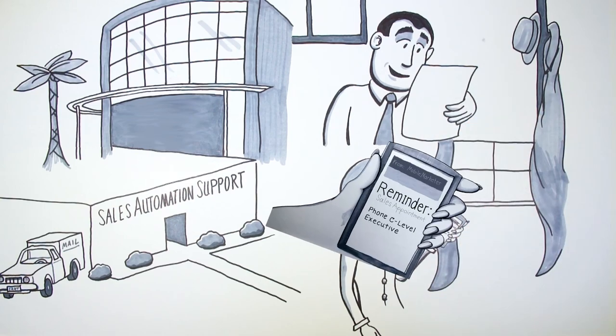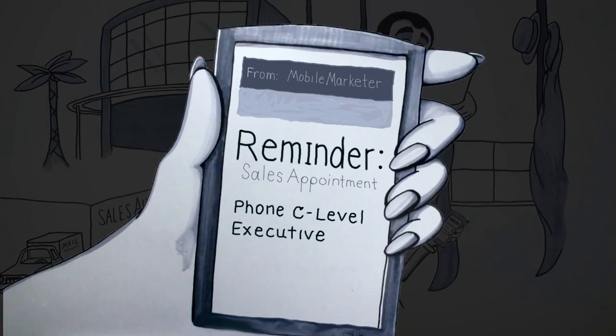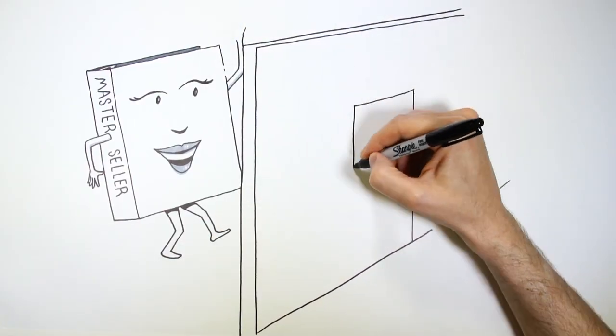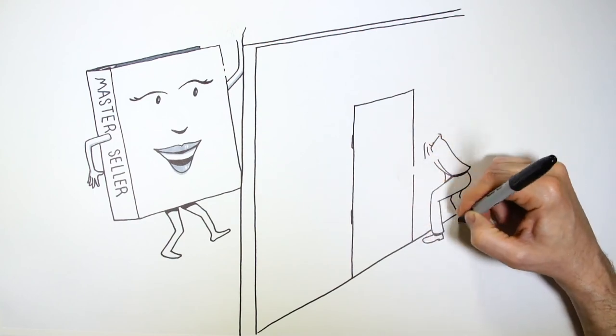Finally, the rep gets an email the following Monday, reminding them to follow up to get that important meeting lined up with the C-level executive prospect. Also on a weekly basis, management receives a sales roll-up report.